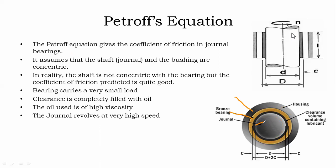This is the shaft, then here we have the journal, then the bearing, the lubrication oil, bearing, and casing. Now what assumptions are we going to make in Petrov's equation derivation?